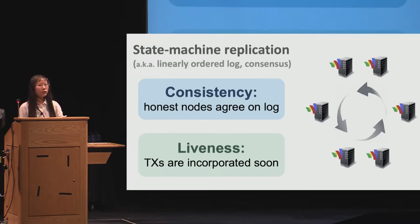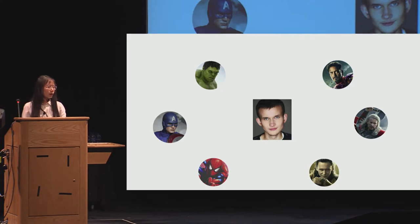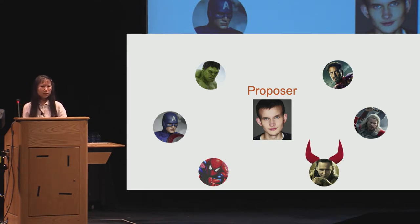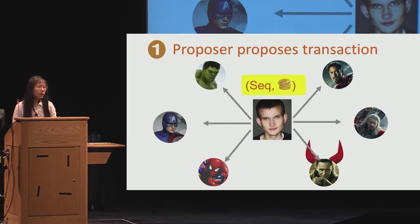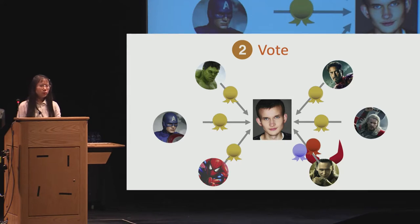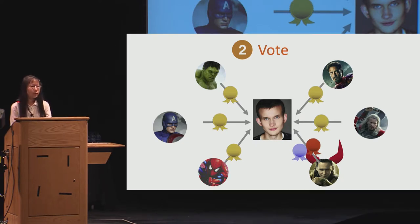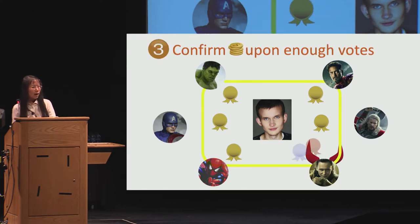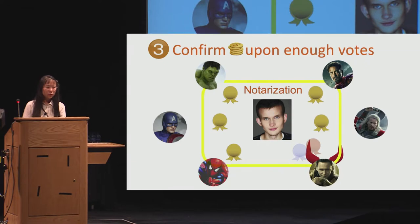Let's take a look at a simple voting protocol that works in a synchronous network. The protocol runs with N nodes: one is a proposer, and the others are voters. Some nodes can be corrupt. When a transaction comes, the proposer signs the transaction with a sequence number and proposes it to the voters. On seeing the proposal, voters vote for it. Importantly, an honest node will only vote for one transaction per sequence number. On collecting enough votes for the same transaction, the proposer forms a notarization and sends it back to the voters. On seeing the notarization, a node considers the transaction confirmed.